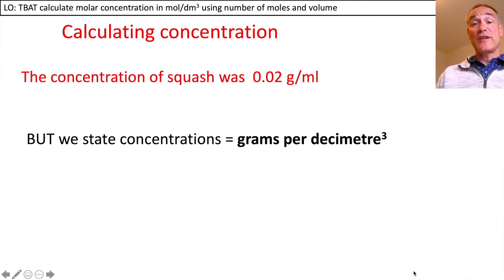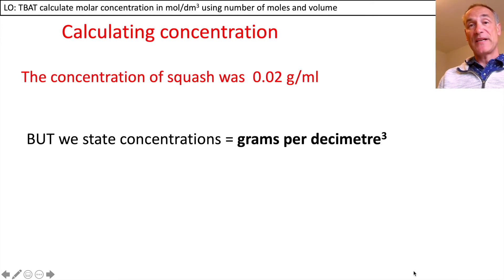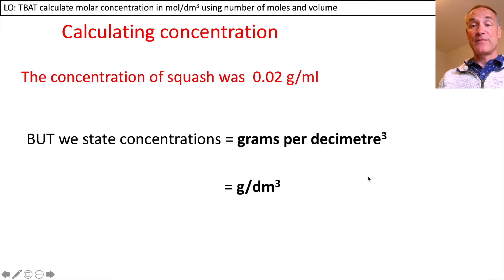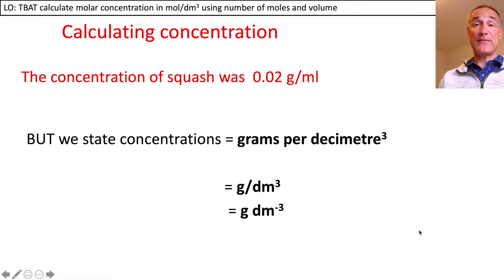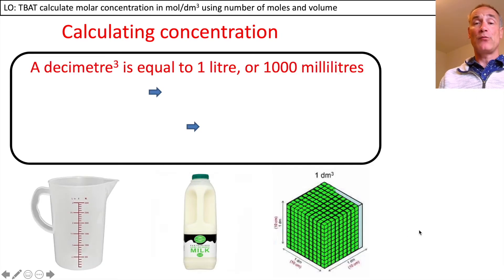The concentration of the squash was 0.02 grams per millilitre, but we need to be able to state concentration in chemistry in grams per decimetre cubed, which is a volume. That's given the symbol grams per decimetre cubed, meaning divided by decimetre cubed, or you may see it written as grams decimetres to the minus three. Those are both the same units.